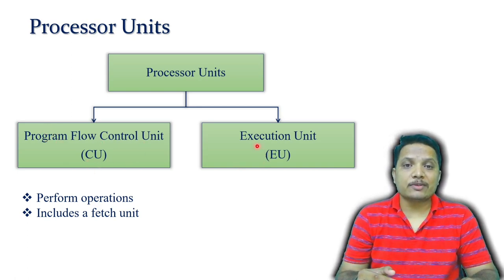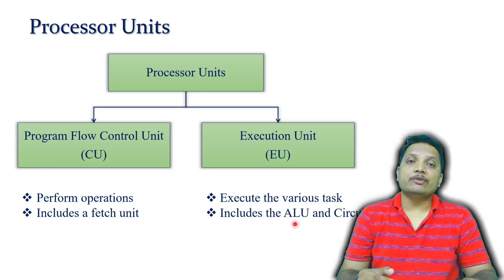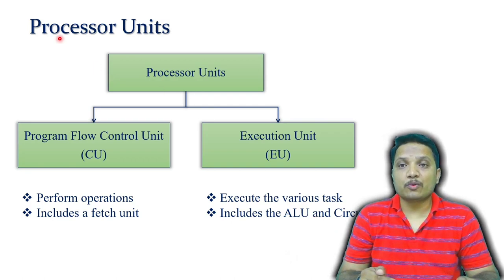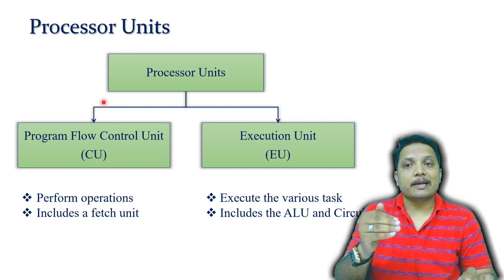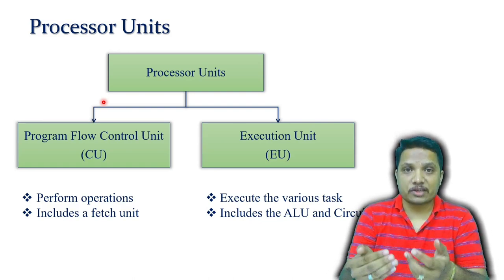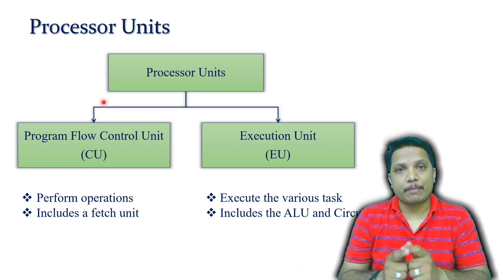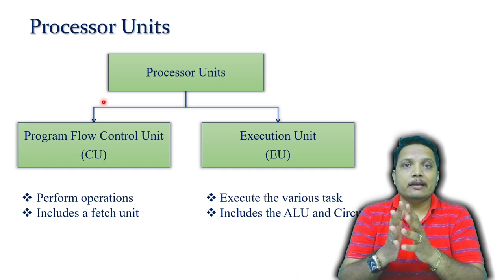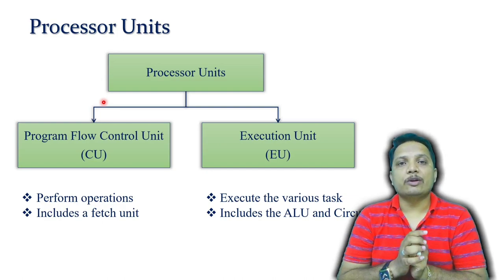When we talk about the Execution Unit, it is used to execute different tasks. It includes the Arithmetic Logic Unit as well as different circuits executing different tasks. So the processor basically has two different units: the Program Flow Control Unit that identifies the flow of execution of instructions, and the Execution Unit that identifies how execution will happen as per the ALU.